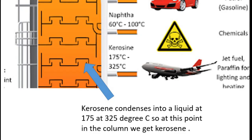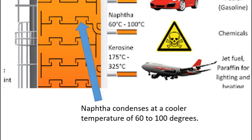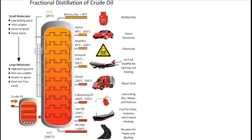Kerosene, which is used as jet fuel, condenses back to a liquid at 175 to 325 degrees C — at this point in the column we get the kerosene fraction. Further up the column at 60 to 100 degrees we get the naphtha recondensing.